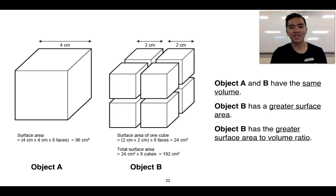The key difference in this case is the surface area. And I'm not going to go through it now, but if we have a look at object A, its surface area is 96 square centimeters. Whereas when we combine the surface area of the eight individual cubes in object B, that gives us a total surface area of 192 square centimeters, which happens to be double that of object A.